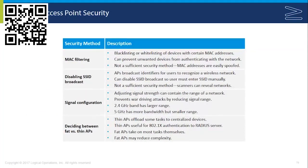MAC filtering is another method for securing wireless access points. You can blacklist or whitelist devices with certain MAC addresses — specifying which devices are allowed or disallowed — to help prevent unwanted devices from authenticating with the network. However, it is not a sufficient security method on its own because MAC addresses can easily be spoofed. It can be used in conjunction with a security protocol, but should not be used by itself.